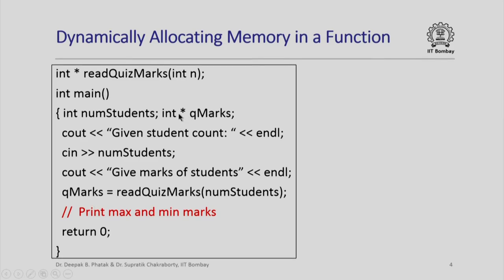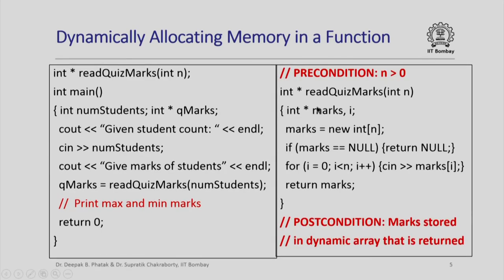So `q_marks` has to be a pointer to an integer. As you can see, `read_quiz_marks` will take in an integer number and return a pointer to an integer. Here is a sample implementation of `read_quiz_marks`. As a precondition I have n greater than 0. As a postcondition I guarantee that the marks of the students are going to be stored in a dynamically allocated array that is going to be returned.